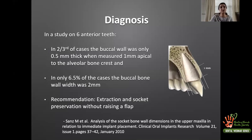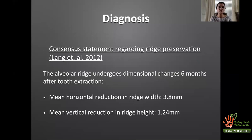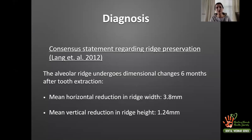Lang et al.'s consensus statement on ridge preservation found that the alveolar ridge undergoes dimensional changes six months after extraction — mean horizontal reduction in ridge width of 3.8 mm and mean vertical reduction in height of 1.24 mm. Imagine a patient presenting with 0.5 mm of buccal bone: with a mean horizontal reduction of 3.8 mm post-extraction, the bone loss is dramatic, making aesthetics very unpredictable for immediate implant placement.